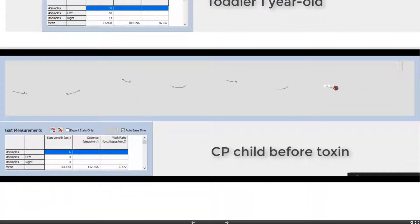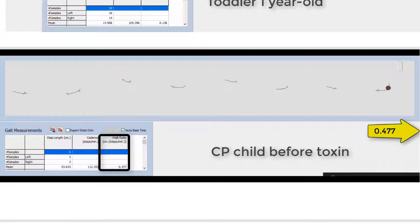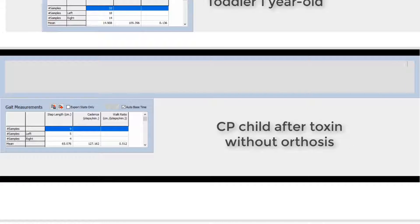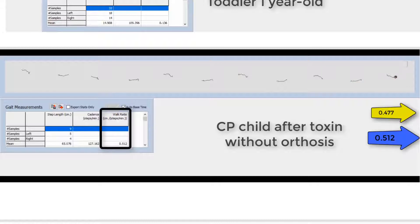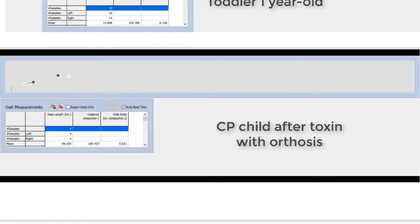In this new example, we follow the changes from pre to post Botox injection in the walk ratio of a child with cerebral palsy. While it changes slightly after toxin injection, the walk ratio is significantly more improved when walking with an orthosis due to the increase in step length.